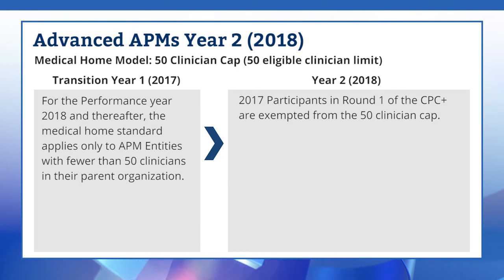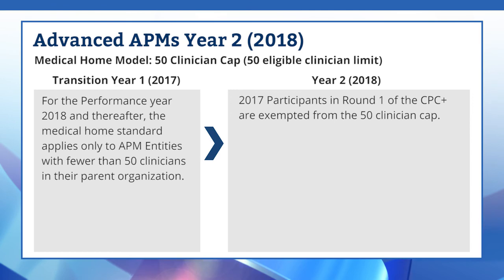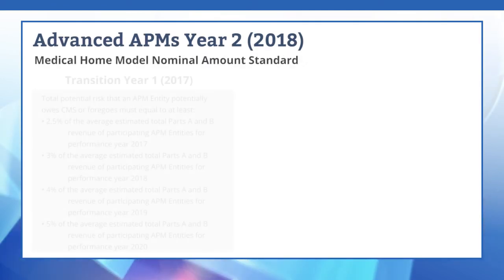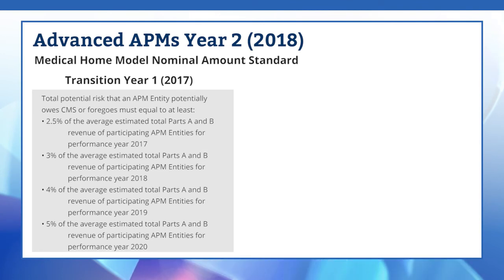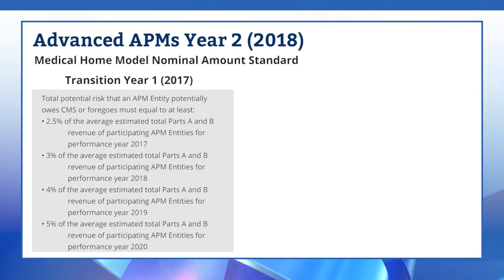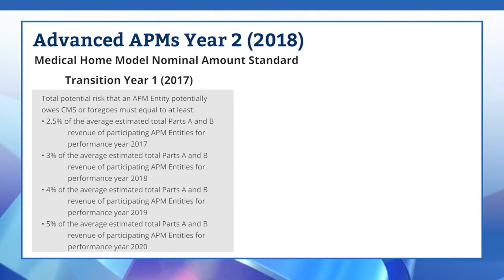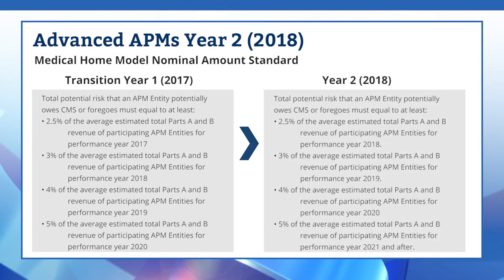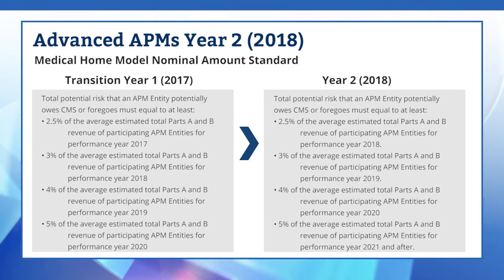However, all future participants in CPC+, including 2018 starters, will be subject to the 50 clinician cap policy. There is also one change to the Medical Home Model Nominal Amounts Standard for Year 2 of the Quality Payment Program. In the 2017 rule, CMS finalized that the total potential risk for an APM entity must be equal to or at least 3% in 2018, and then gradually increased to 5% in 2020 and thereafter. The nominal amounts are changed so that the minimum required amount of total risk increases more gradually. Therefore, the standard of 2.5% will apply in 2018 and then increase to 5% in 2021 and thereafter.